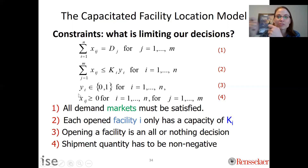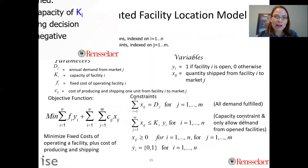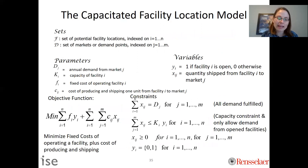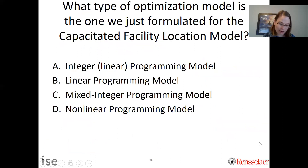Constraint three enforces that Y_i is a binary decision variable — you either build or not. Constraint four says we can only send non-negative shipments. One important note: even though it seems innocent, adding a binary variable makes this a more complicated problem to solve. It is no longer a strict linear program but an integer linear program, which is more difficult to solve. The clicker question asks: what type of optimization model is the capacitated facility location problem?